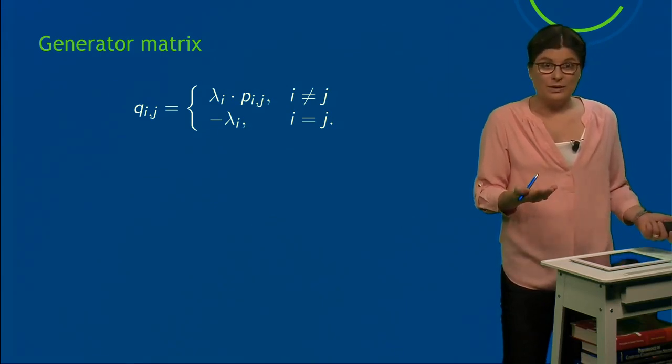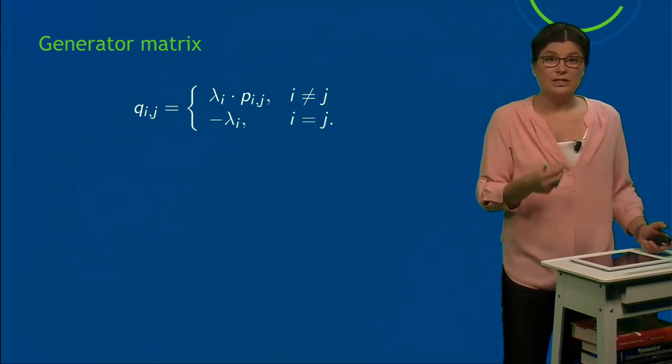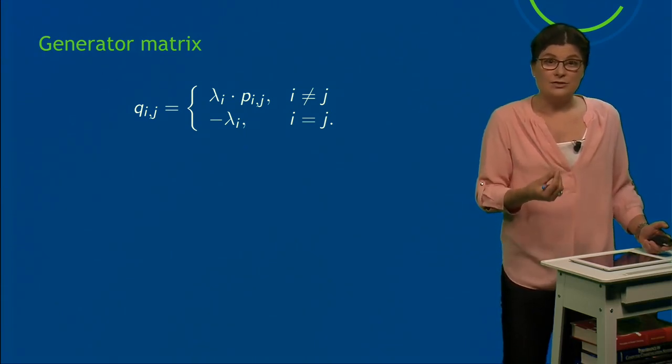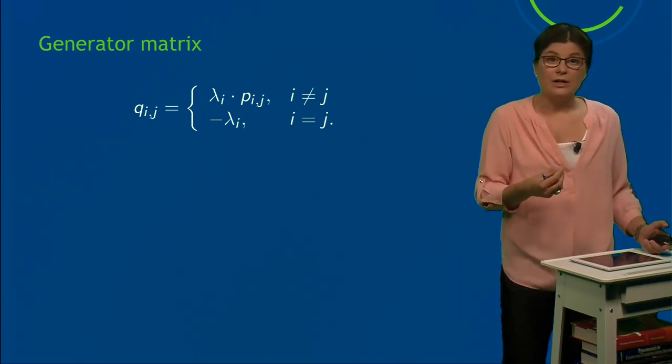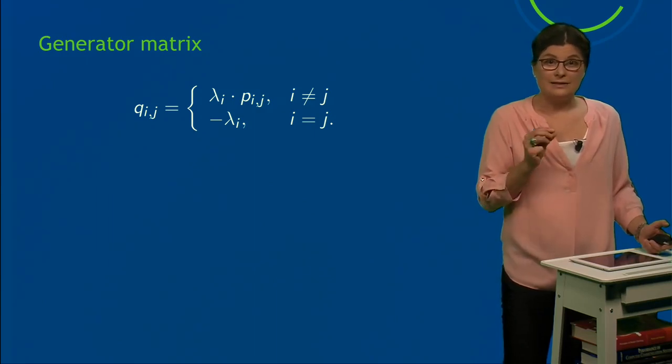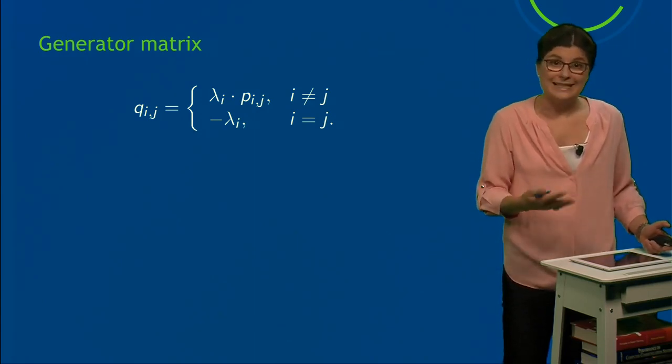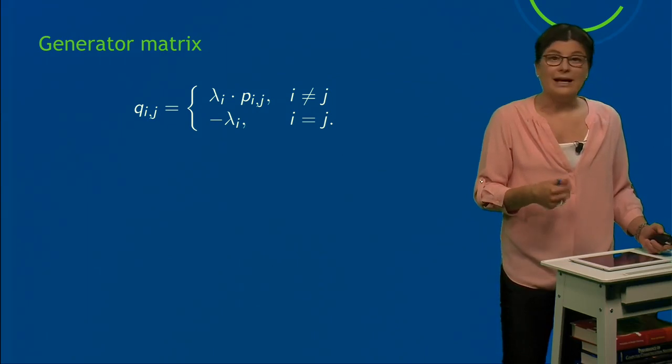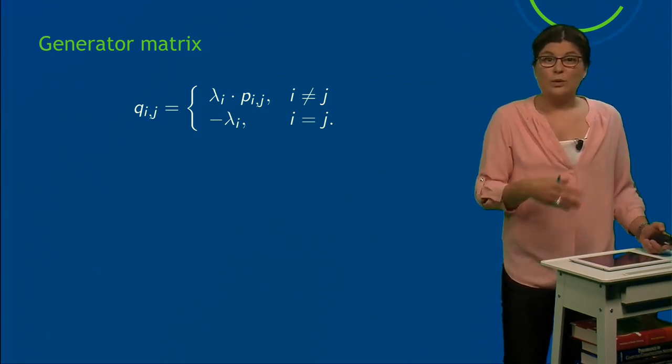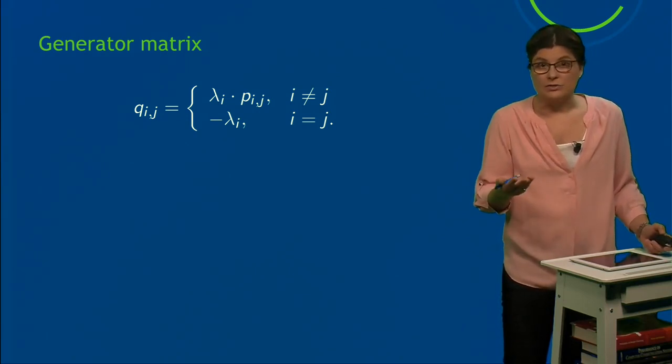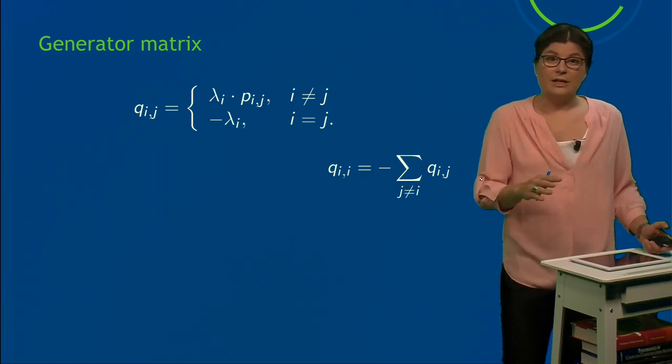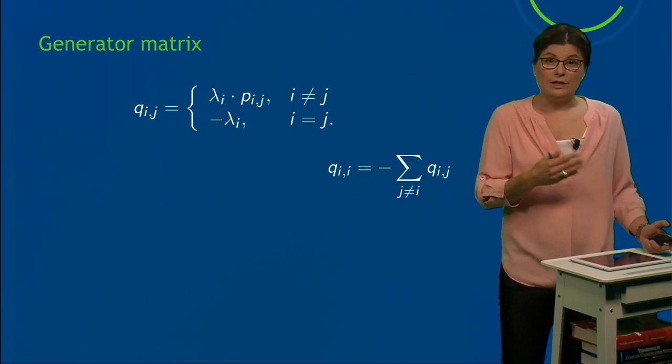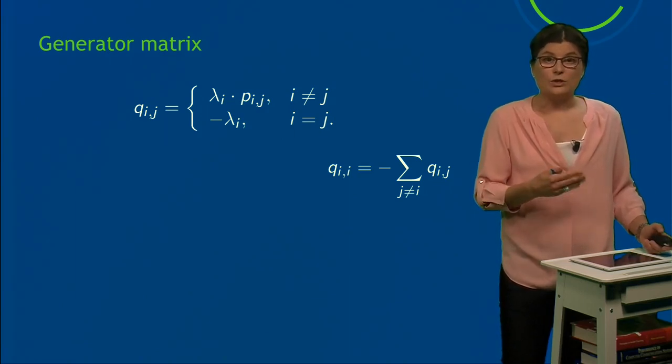This is the formalization. The generator matrix Q_ij contains in every entry either λ_i × P_ij (that is for all i ≠ j), and for all i = j (those entries on the diagonal), we have -λ_i. So now you might think that you always have to reconstruct this λ_i. Well, you don't, because you can do it a bit easier and just write on the diagonal the negative row sum of all the entries for which i ≠ j.